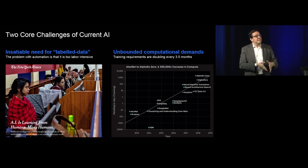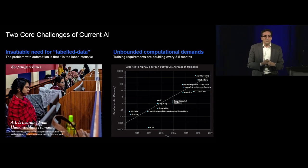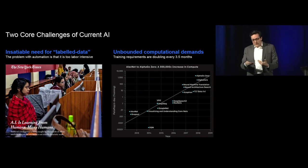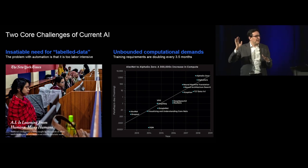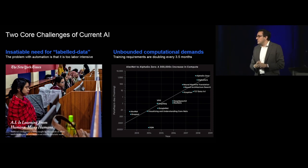There are two core challenges that we as a community continue to face in AI, particularly with this neural network-based implementation. One has to do with this insatiable need for labeled data. I'll pass on a joke from David Cox, who heads our MIT-IBM AI lab, where he says the problem with automation is that it's too labor-intensive. I'm referencing here an article written by Kate Metz in the New York Times. Under the rug of the AI stories, tens of thousands of humans are labeling data behind the scenes to be able to implement these neural networks. The world is not swimming in labeled data.